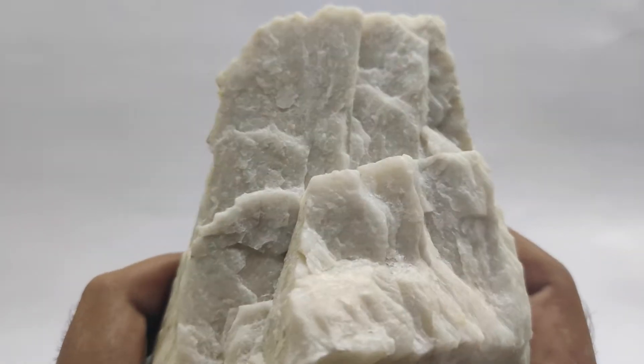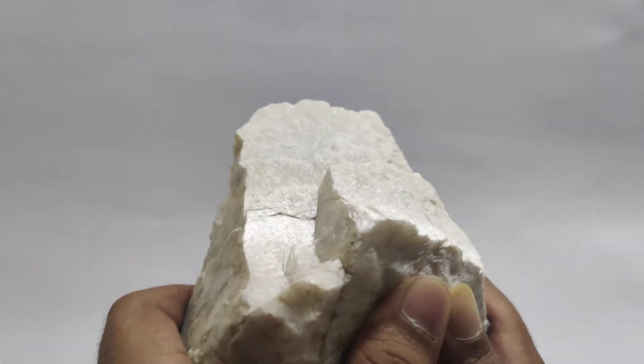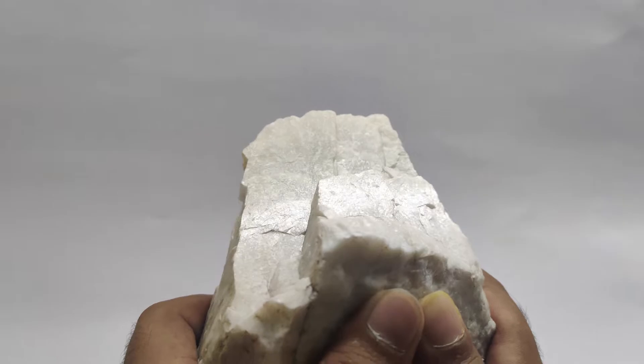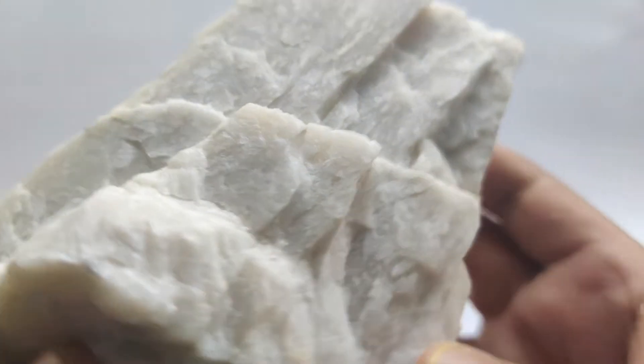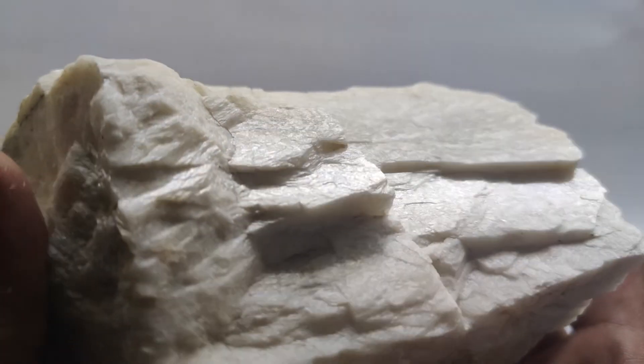The main impurity in potash feldspar is iron, which gives the mineral a brownish color. Although the iron content can vary significantly, the best quality white potash feldspar has a low iron content. This low iron content is essential for many applications, such as in the production of white ceramic ware.